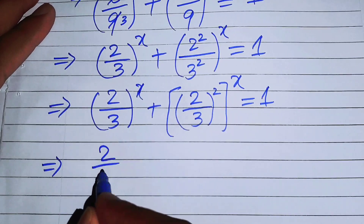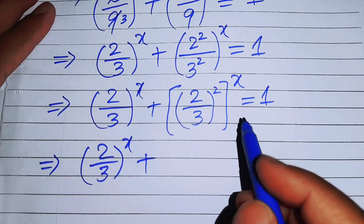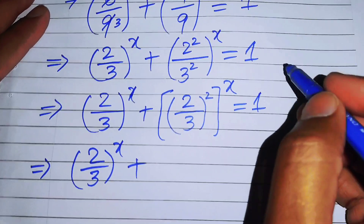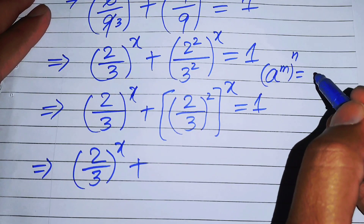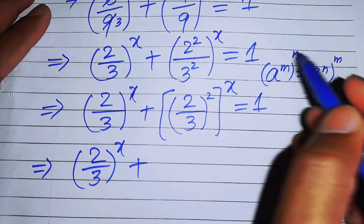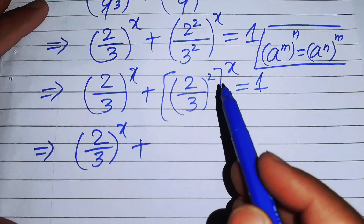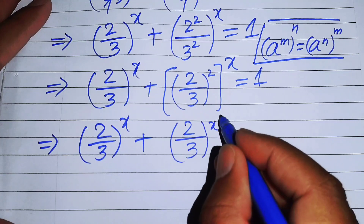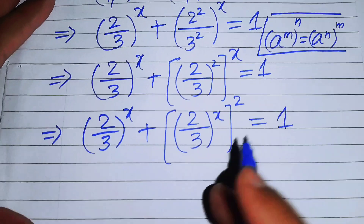After that we can write these terms as 2 over 3 to the power of x, and we interchange the two exponents. According to the exponential law, if we have a to the power of m to the power of n, we can interchange these exponents so it becomes a to the power of n to the power of m. This expression becomes (2/3) to the power of x, whole squared, equals 1.